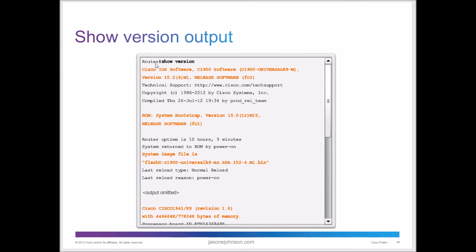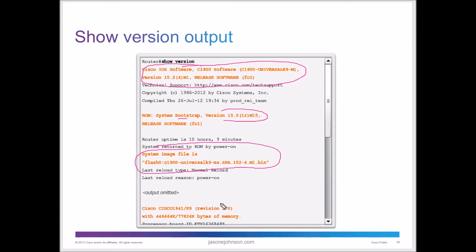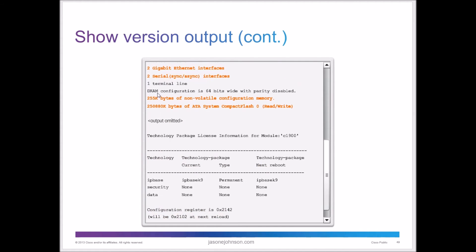If you do a 'show version' command on your router, you'll get version information including the Cisco IOS version and the system image file location. The continued output also shows your non-volatile configuration memory size and compact flash memory details.